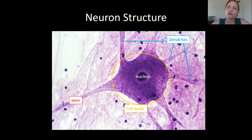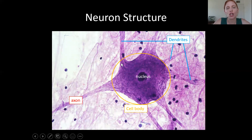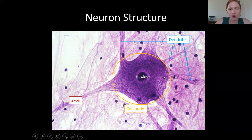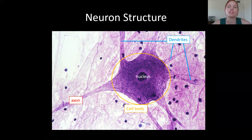Now let's look at the structure of the neuron. The neuron has one fatter part, and in the middle of that fat part is the nucleus. This fat region is called the cell body, also known as the neurosoma. Here is the cell body with the nucleus in the middle, and then coming off of it you're going to have a bunch of processes — things that kind of stick out of the cell body.